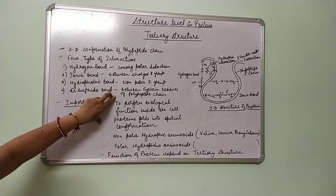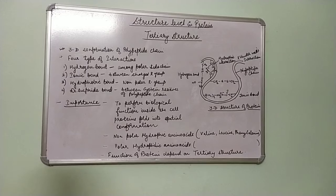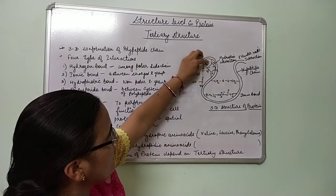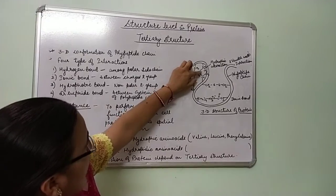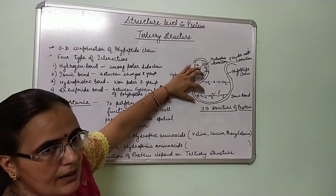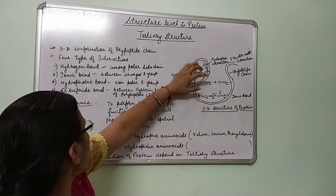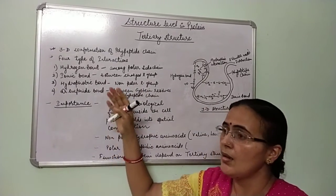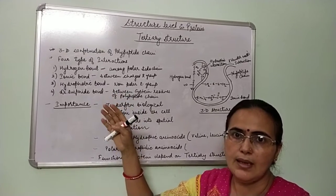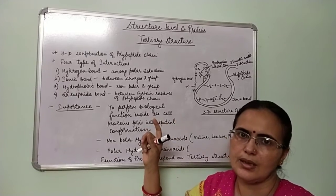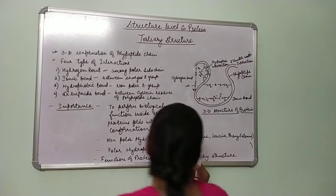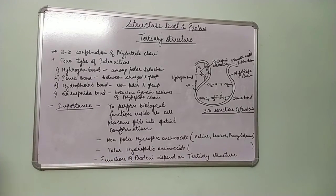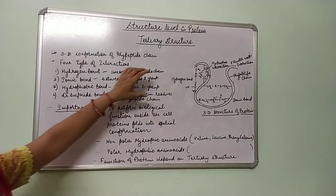The fourth and most important bond is the disulfide bond, formed between the cysteine residues of the polypeptide chain. Hydrophobic interactions occur among non-polar R groups, and ionic bonds form between charged side chains. Although these bonds are weak individually, hundreds or thousands of them together make this three-dimensional structure very stable to perform biological functions.